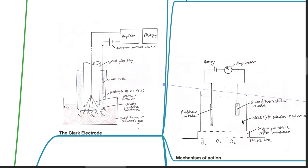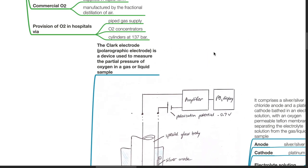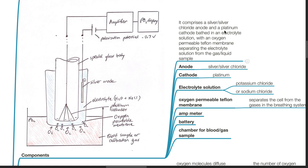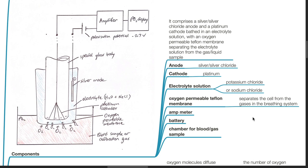The Clark electrode, or polarographic electrode, is a device used to measure the partial pressure of oxygen in a gas or liquid sample. Components comprise a silver-silver chloride anode and a platinum cathode based in an electrolyte solution, with an oxygen-permeable Teflon membrane separating the electrolyte solution from the gas or liquid sample. The anode is made of silver or silver chloride, the cathode of platinum, and the electrolyte solution is potassium chloride or sodium chloride. There is also an ammeter, battery, and a chamber for blood or gas sample.